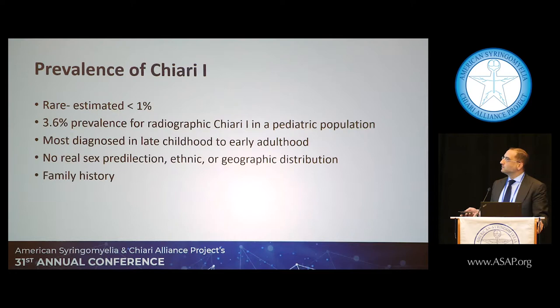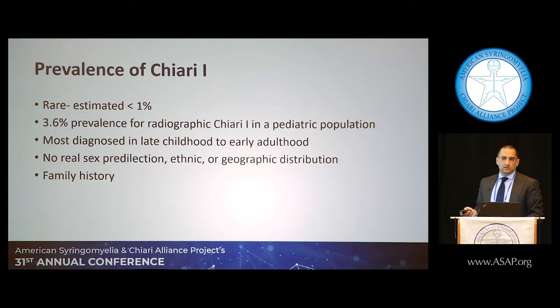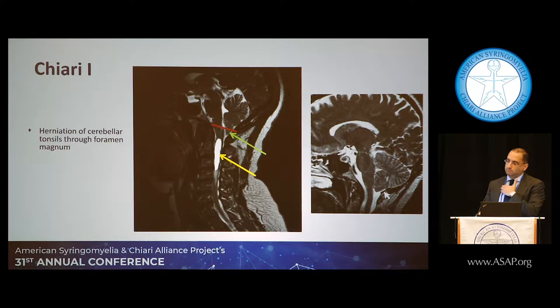The prevalence is relatively rare overall. From studies in 2011, a certain percentage occurs in children, based on that five-millimeter measurement on MRI. There's no known gender predilection, but there is a familial association — I have patients with three generations of Chiari and some with two generations, with multiple surgeries among them. There are different types of Chiari classification, anywhere from zero to four.